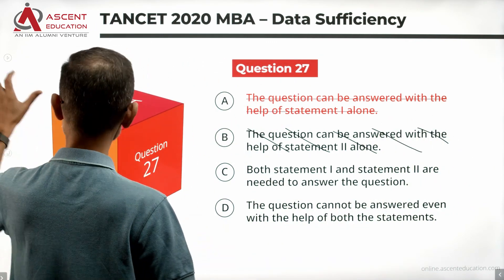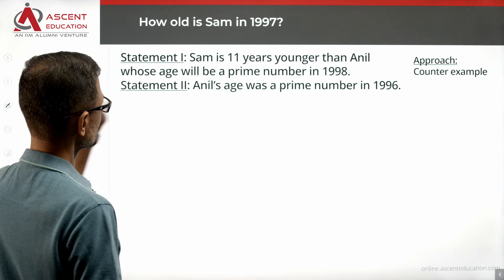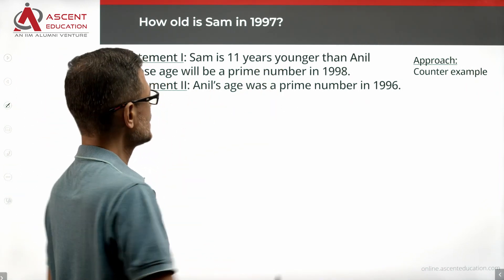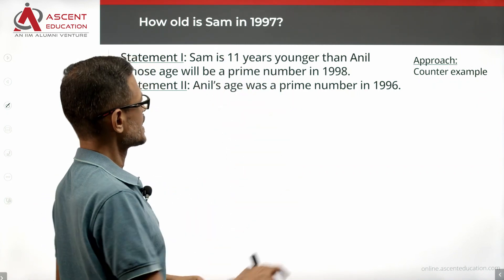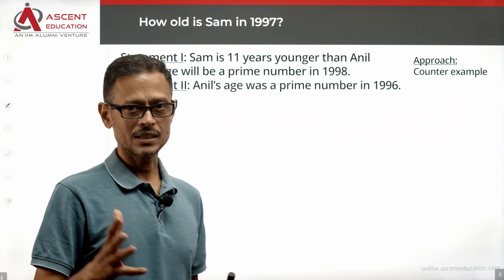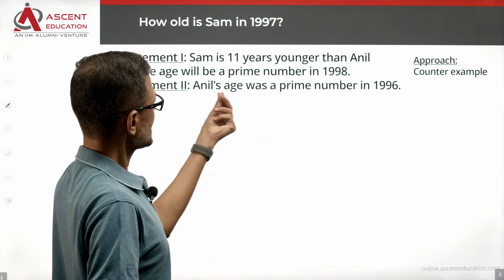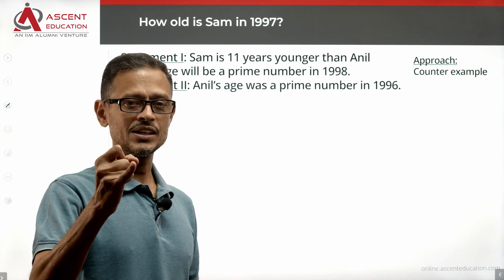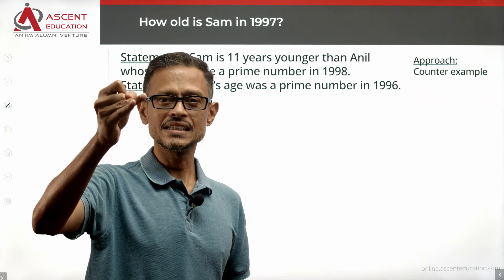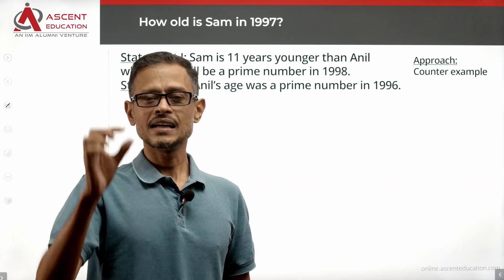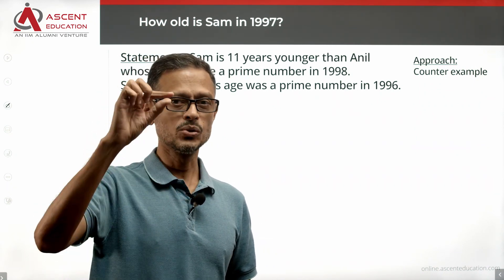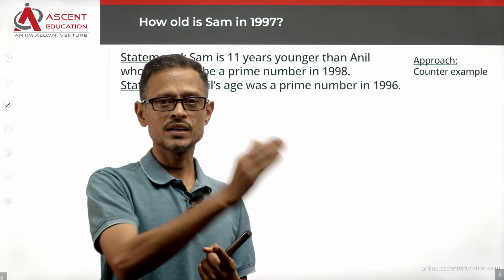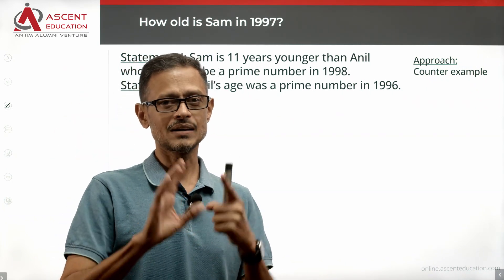Now let's combine the two statements. Combining them, we have: Sam is 11 years younger than Anil, and Anil's age in 1998 is a prime number. Also, Anil's age was a prime number in 1996. So both 1996 and 1998 are years where Anil's age is a prime number. Can we backwork a unique value for Sam's age?